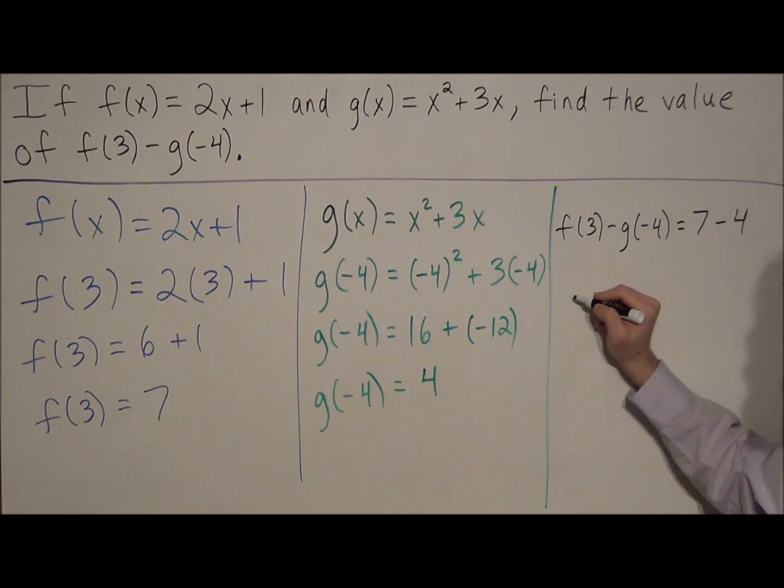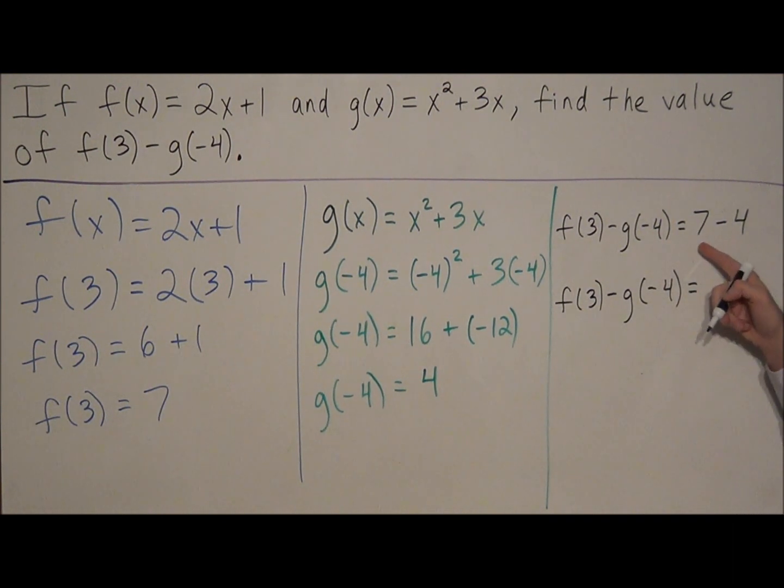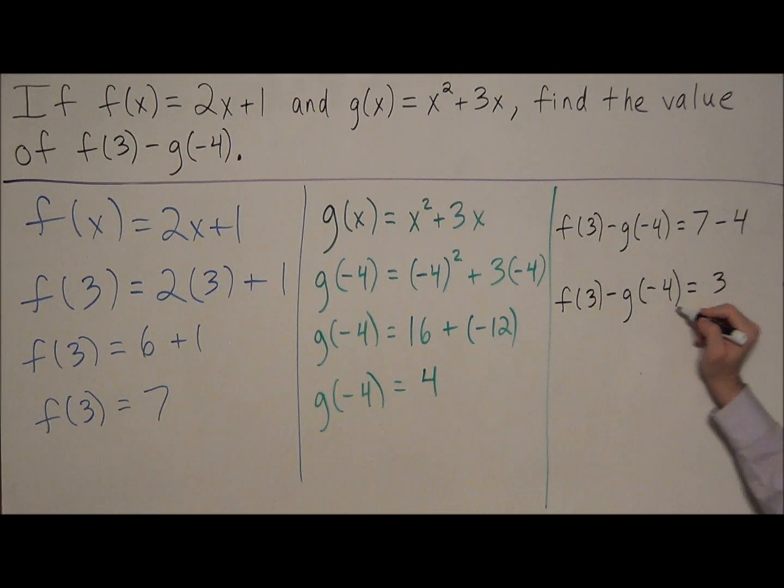So the final answer to this problem, we have f of 3 minus g of negative 4 is equal to, and 7 minus 4 simplifies to 3. So the final answer to this problem is going to be 3.